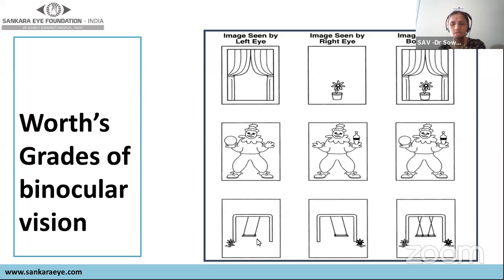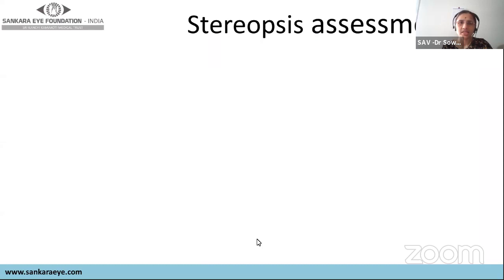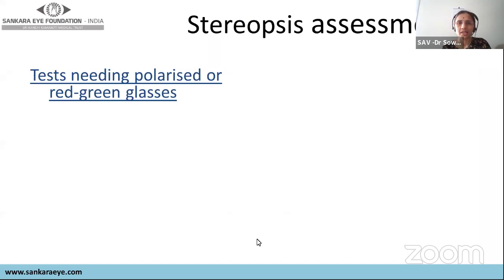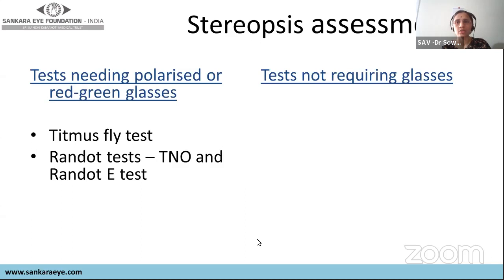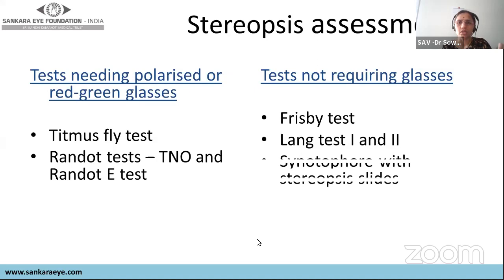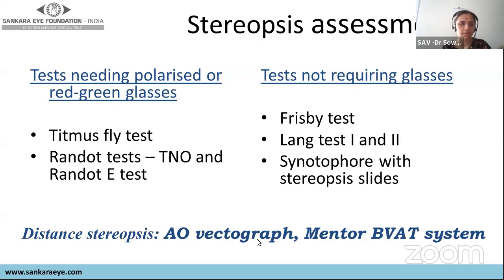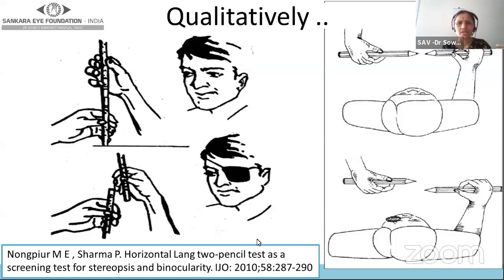When assessing a strabismus case, we start with stereopsis. Stereopsis can be assessed qualitatively or quantitatively. Tests requiring polarized glasses include the Titmus fly test, Randot test, and Randot E test; tests requiring red-green glasses include TNO. Tests that don't require glasses include the Frisby test, Lang test 1 and 2, and the synoptophore with stereopsis slides. All these are near stereopsis tests (at 33–40 cm). For distance stereopsis, the AO vectograph or Mentor B-VAT system is used.